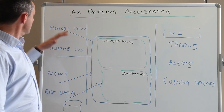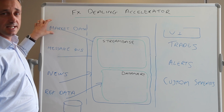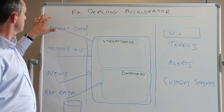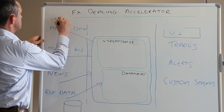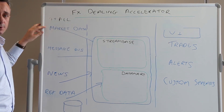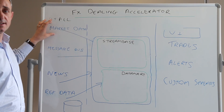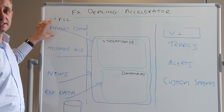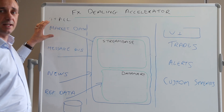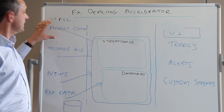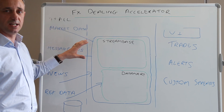On the left hand side we have our inbound data feeds. On the top we have market data, and this will be such things as FX All, Barclays, or Deutsche Bank. These are pre-built components inside the FX Dealing Accelerator that give you venue connectivity, venue handling, and all the handshaking that's needed to get that market data into your trading platform.